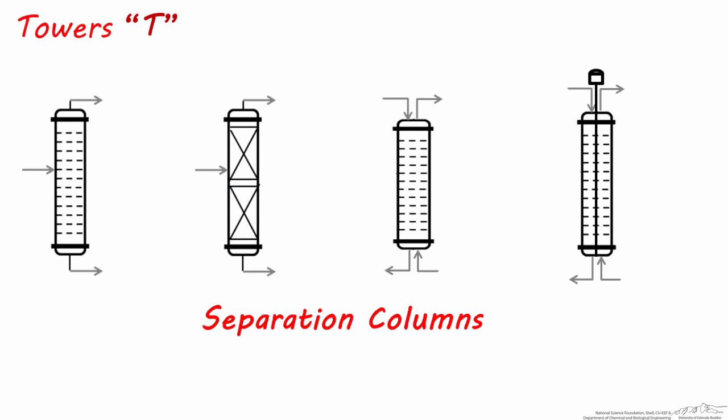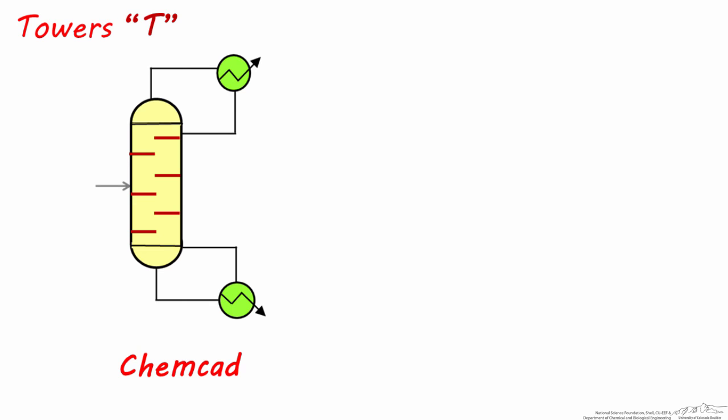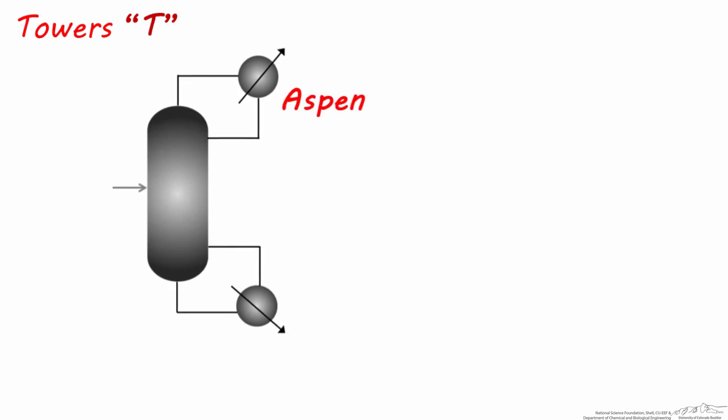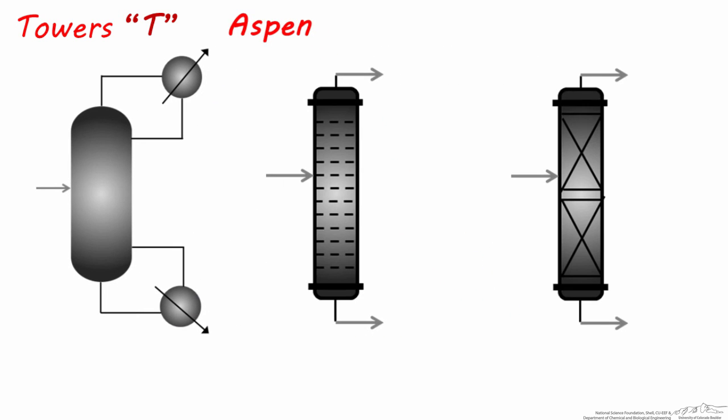Let's next look at how these separation equipment units are represented in ChemCAD and Aspen. This symbol is the default distillation unit for ChemCAD, and this one is the most common distillation column symbol in Aspen. Notice both of these already include condenser and reboiler units, so you don't necessarily have to design these as separate heat exchangers when building a process flow diagram in ChemCAD or Aspen. The ChemCAD symbol is used quite frequently, but in terms of Aspen symbols, there are a couple other variations for separations processes.